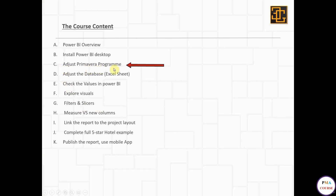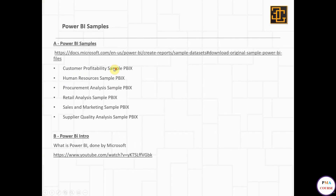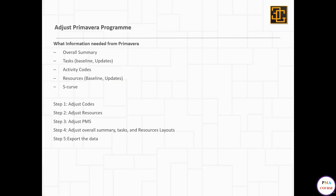I'm going to talk about how to adjust your Primavera program. Before we start, just two notes: first, there are too many ways to do this. I couldn't find many sources linking Primavera and Power BI, so this is my own way. I'm not saying this is the best way — I promise you it works. If any of you can find a better way, please share it with me and we can brainstorm together.